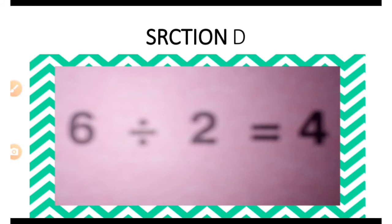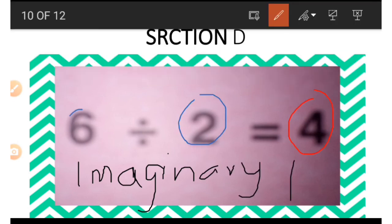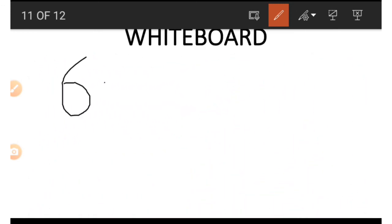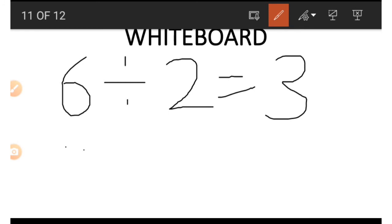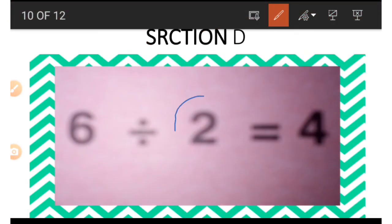Now let's look at Section D, the final section. There is an imaginary number in this section and that imaginary number is 1. Using this 1 could involve adding or subtracting depending on what we are trying to find. If we wish to get the 4, we first divide 6 by 2, which gives us 3, then add the imaginary 1 — so 3 plus 1 gives us 4.